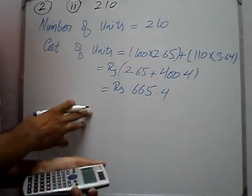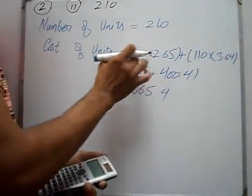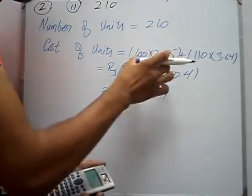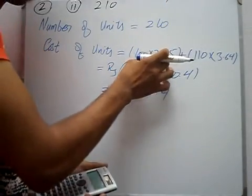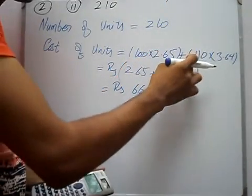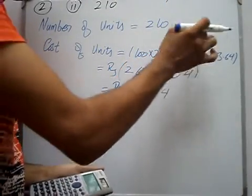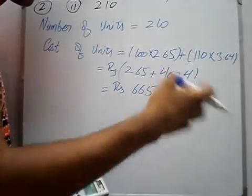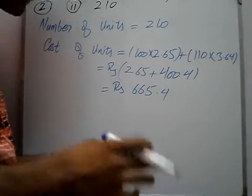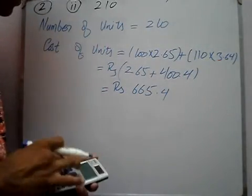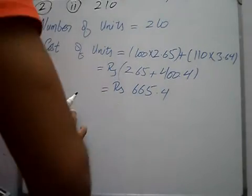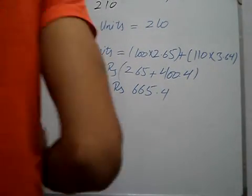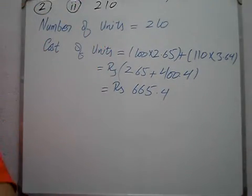So first 100 units plus 110 units, up to 300. Plus cost: 1.50 and price.